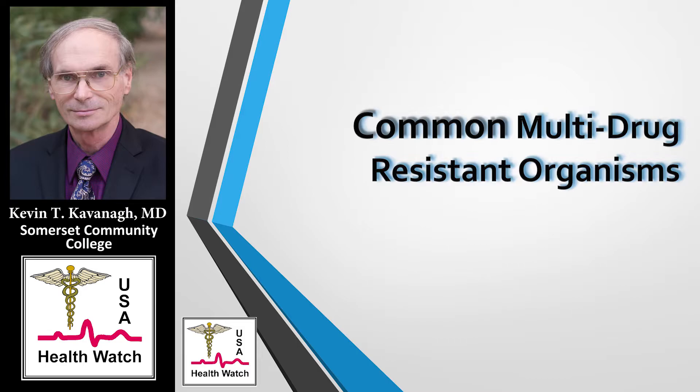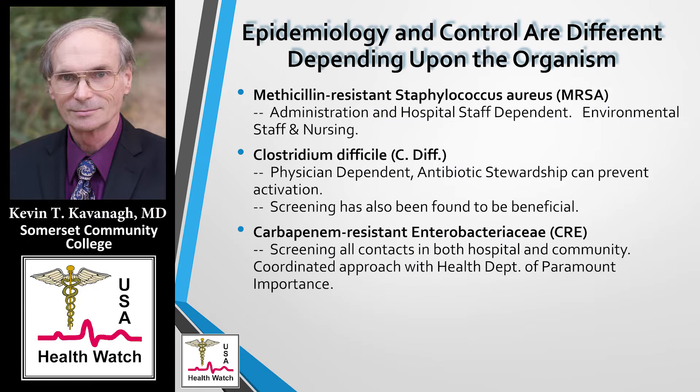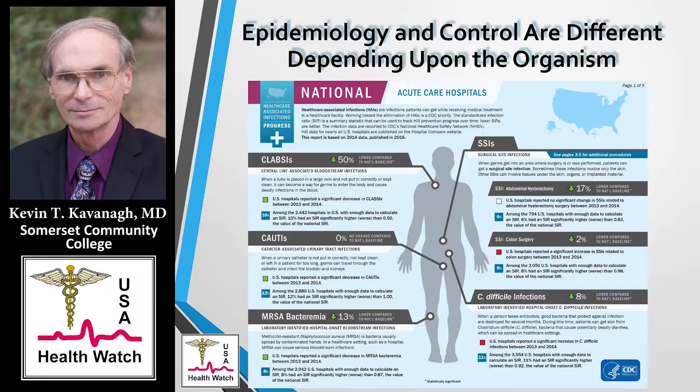Now let's talk about common resistant organisms. There are three which you hear a lot about in the news media: methicillin-resistant Staph aureus, Clostridium difficile, and carbapenem-resistant Enterobacteriaceae. The prevention of each is somewhat different. If you look at how the United States is doing with combating these infections, the answer is not very well.